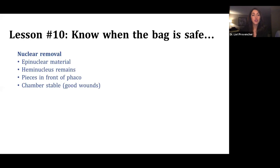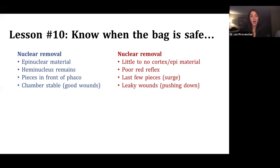So during nuclear removal, if there's a lot of epinuclear material, you're safer. The bag is pushed back, and it's out of the way of the phaco needle. Similarly, when there's a hemi-nucleus still in the bag, the bag is kept back well, generally. Or when there are nuclear pieces in front of your phaco tip, that usually protects the bag from coming up to the phaco needle. Also, if you have a stable chamber, you're going to be safer. The converse to that is you're less safe and the bag is more at risk when there's little or no cortical or epinuclear material.